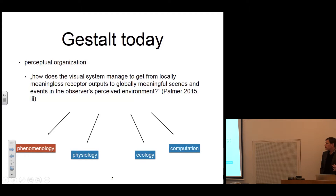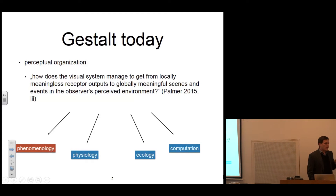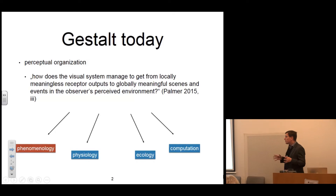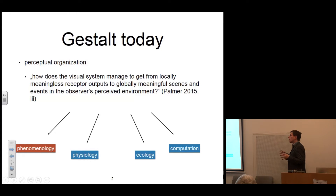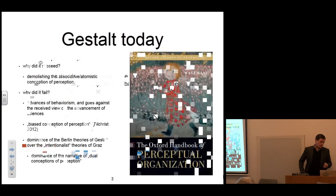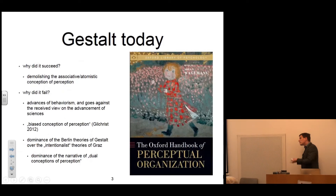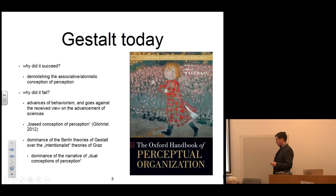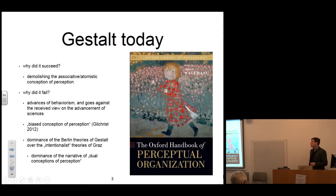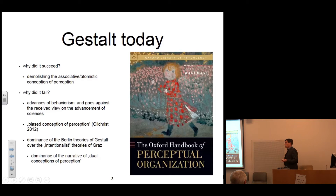Palmer identifies different fields of perceptual organization: computation, ecology, physiology, but also phenomenology. In the subfield of phenomenology, this is where Gestalt theory has something to say. This is also the position defended by the editor of the volume, Johann Wagemans, who is an experimental psychologist from Leuven in Belgium and probably one of the leading psychologists working today on Gestalt theory on an experimental basis.